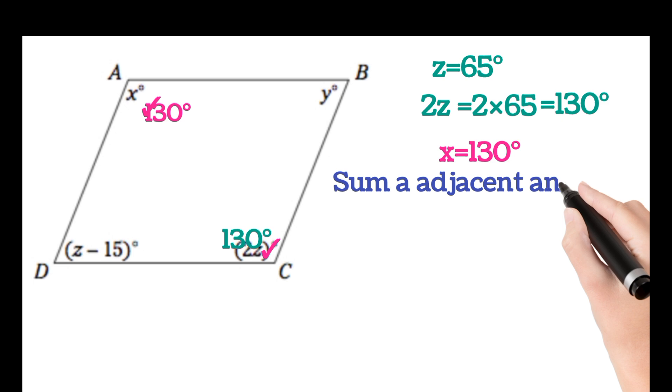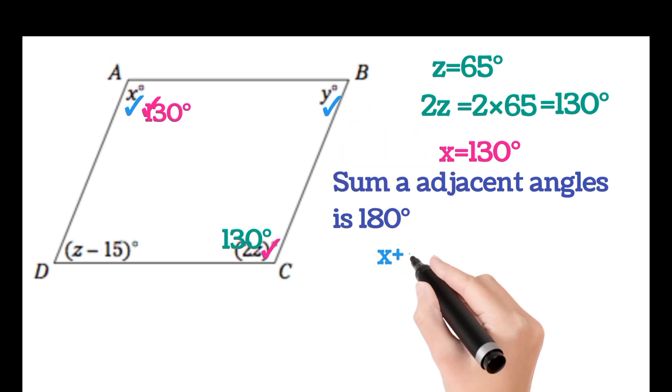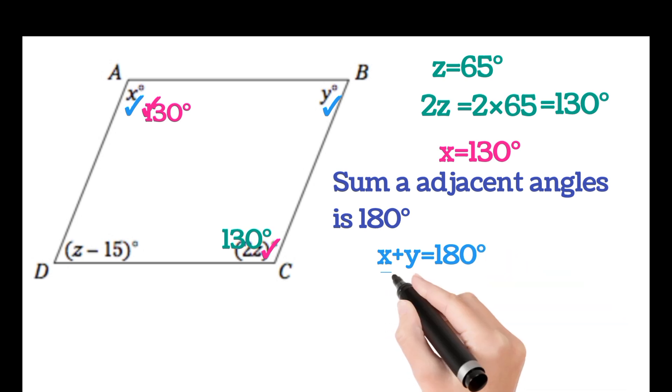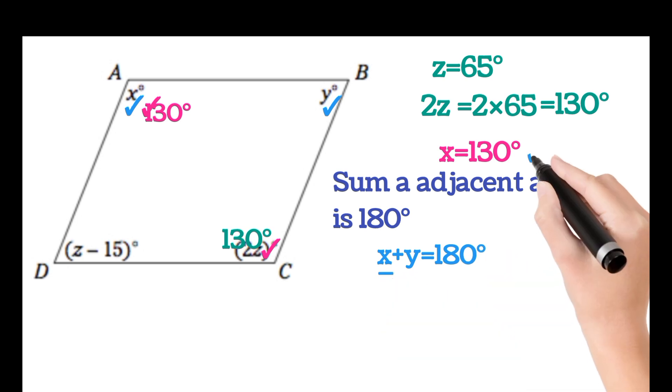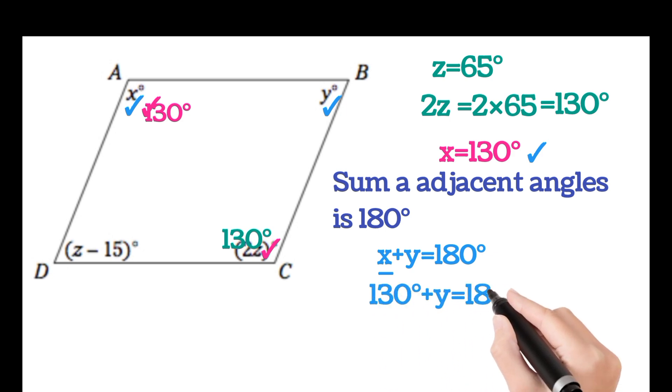We also know that the sum of adjacent angles is 180 degrees. So this angle plus this angle will be 180 degrees, that is x plus y is equal to 180. X we have calculated as 130 degrees, so 130 plus y is equal to 180. That is y is equal to 180 minus 130. This implies y is equal to 50 degrees.